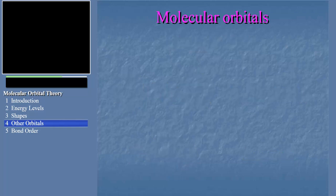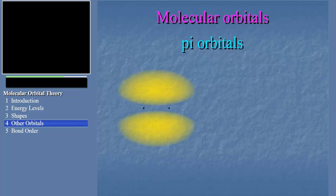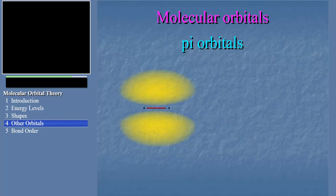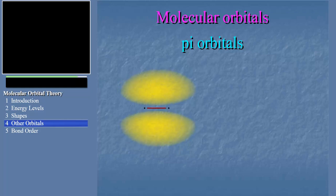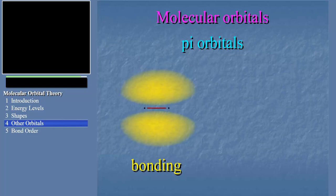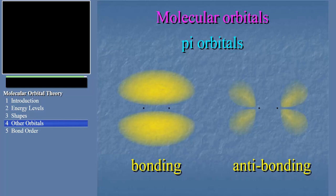Another common type of molecular orbital is called the pi-type. Pi-type molecular orbitals have the common characteristic of having a planar node in the bond axis. That means there's no electron density in the bond axis — the electron density is above and below the bond axis. Just as with sigma-type orbitals, we can have bonding pi-type orbitals and anti-bonding pi-type orbitals. The one you see is a simple bonding pi-type orbital. Notice that the electron density is higher between the nuclei, pulling them together. And here's an anti-bonding pi-type molecular orbital — notice the electron density is away from the nuclei, pulling them apart.